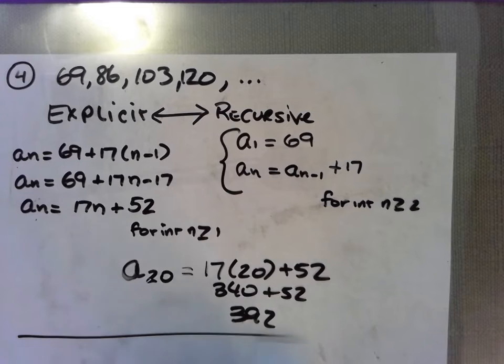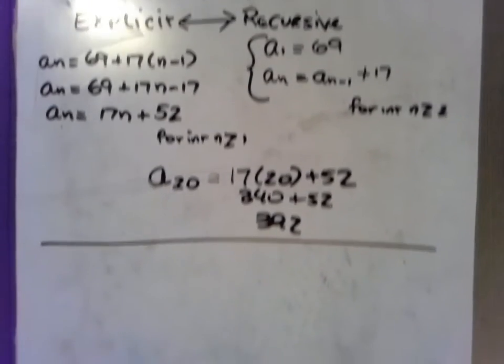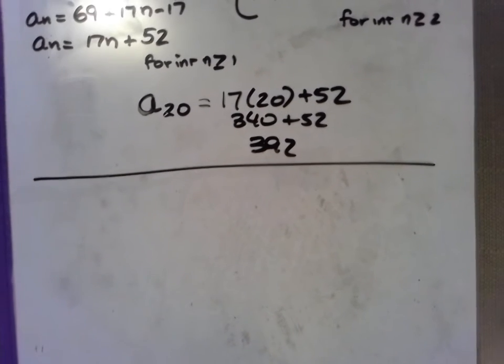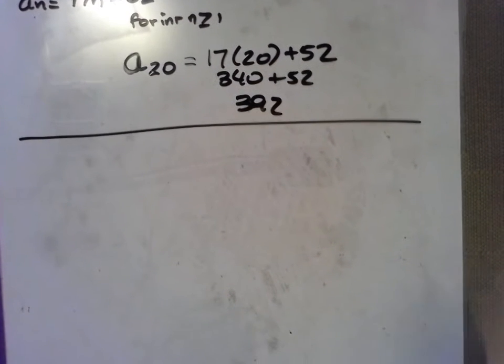The other thing I wanted to cover is what if you don't have consecutive terms? One neat trick about arithmetic sequences is if you have any two terms, you can be able to write an explicit formula for this doing some quick and simple math. So let's take a look at how we can do this. What I'm going to do is find an exercise for us to work on.